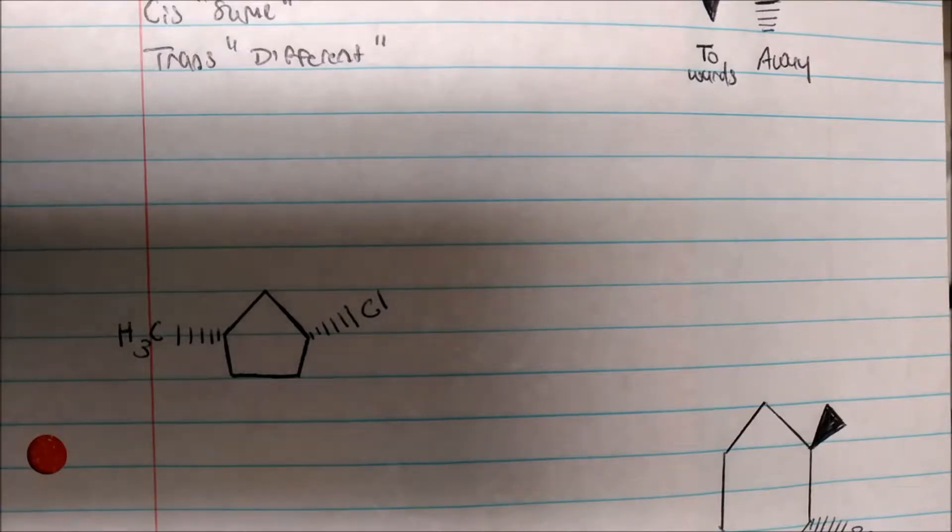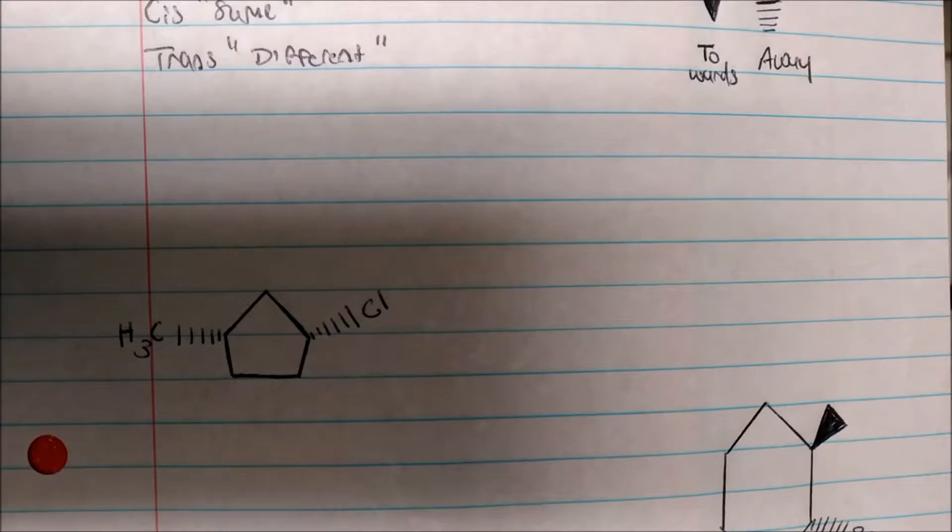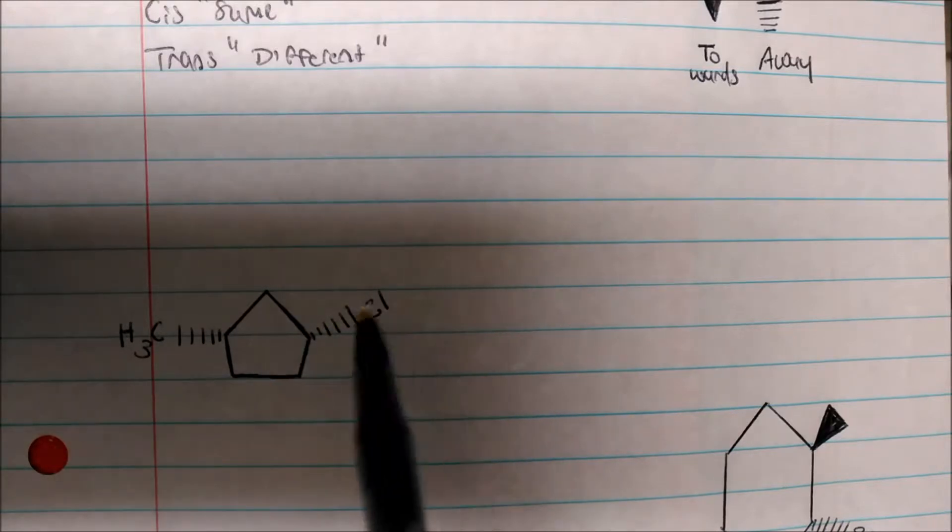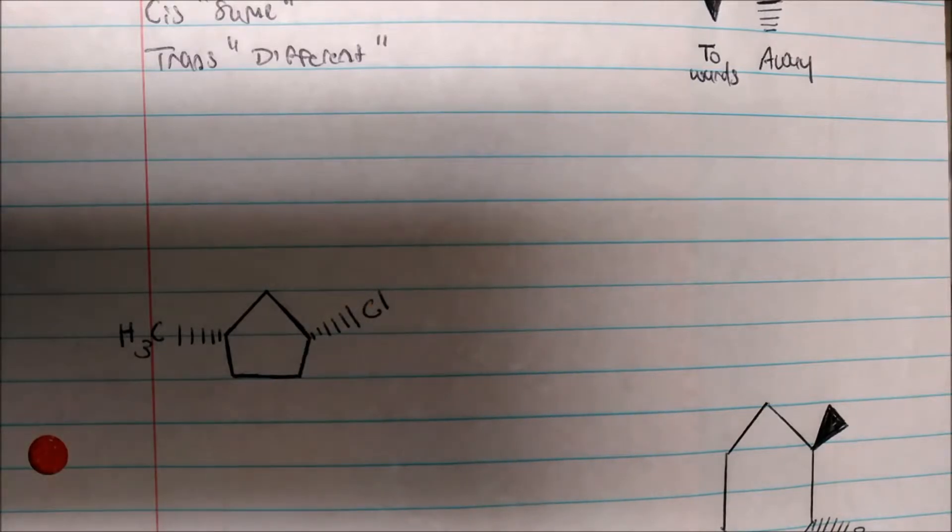Another way of thinking about it is that if your wedges or dashes match, that means they're cis. And trans will be different, obviously, if you have a wedge and a dash. So this could be two wedges, it'll also be cis. Two dashes also be cis because they're both kind of on the same side.